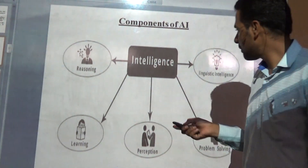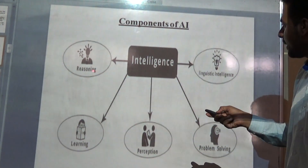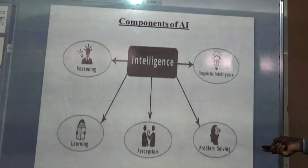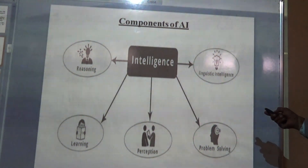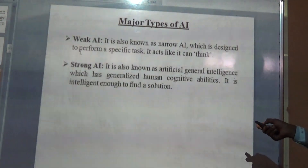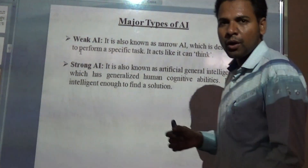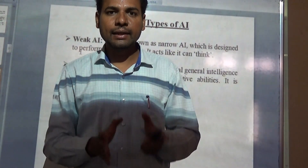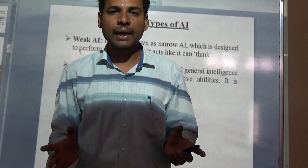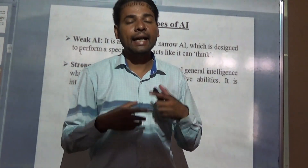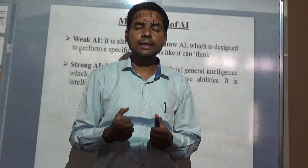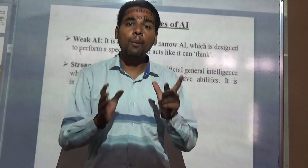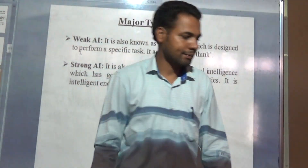As shown in the diagram, the machine should have reasoning ability, learning ability, perception, problem solving ability, and intelligence. So this is all about today's lecture — we discussed the syllabus of unit one, the teaching and exam pattern, AI definitions, what exactly an agent is, and the components of AI. Thank you.